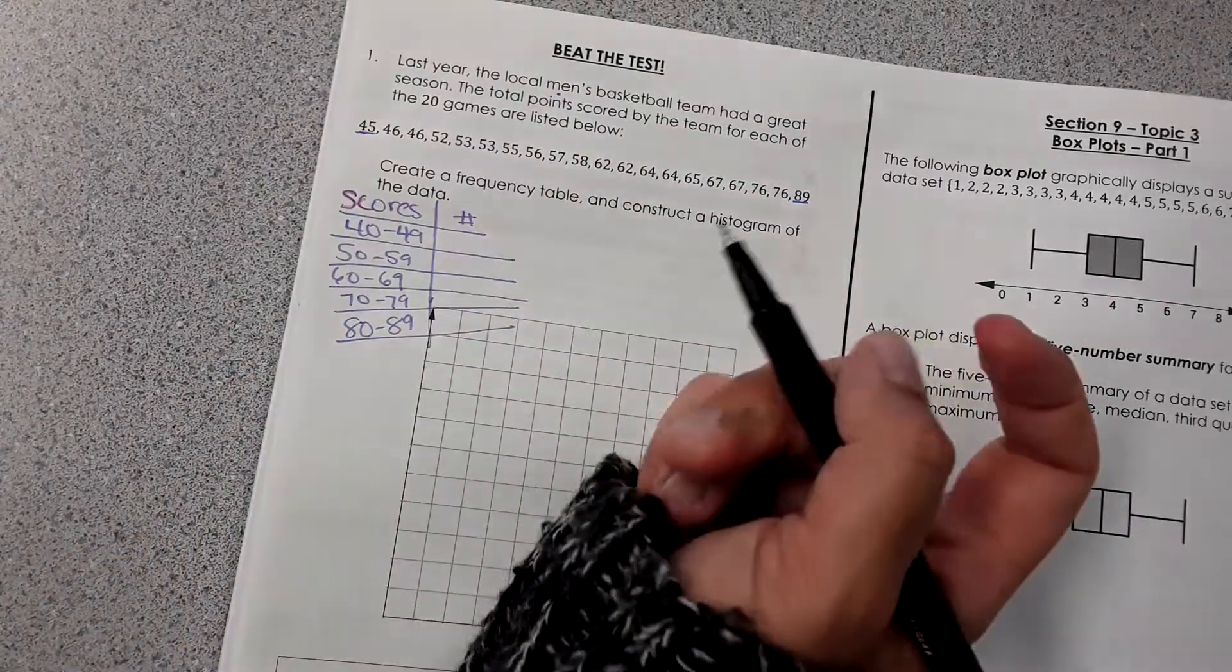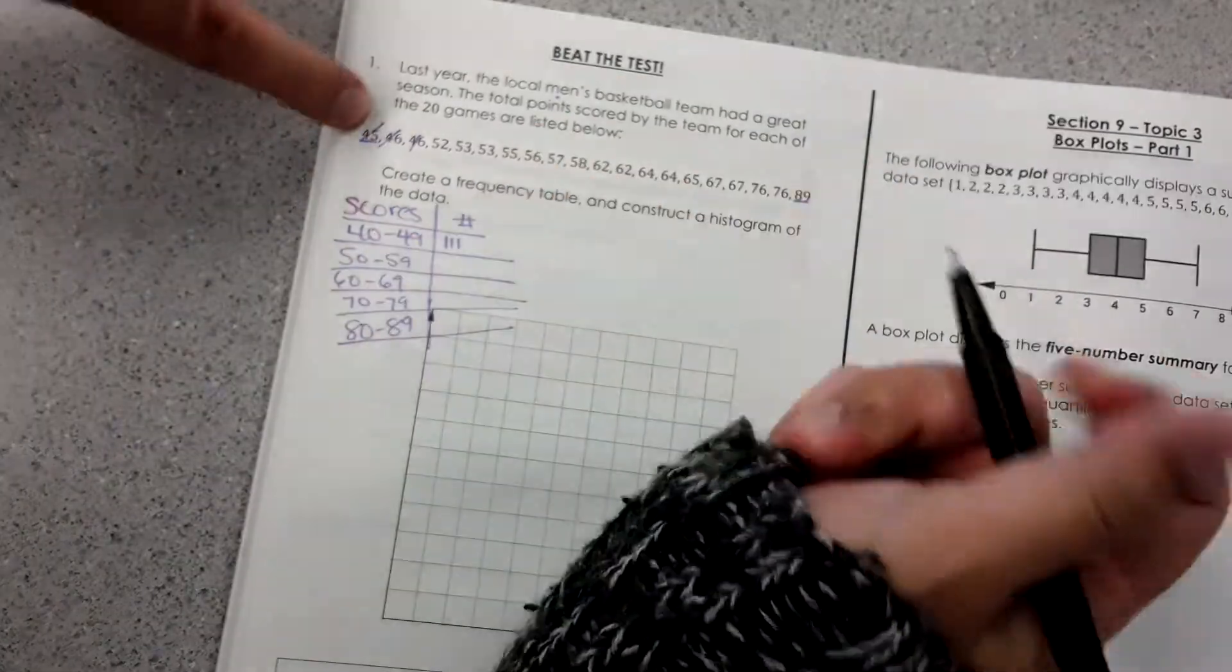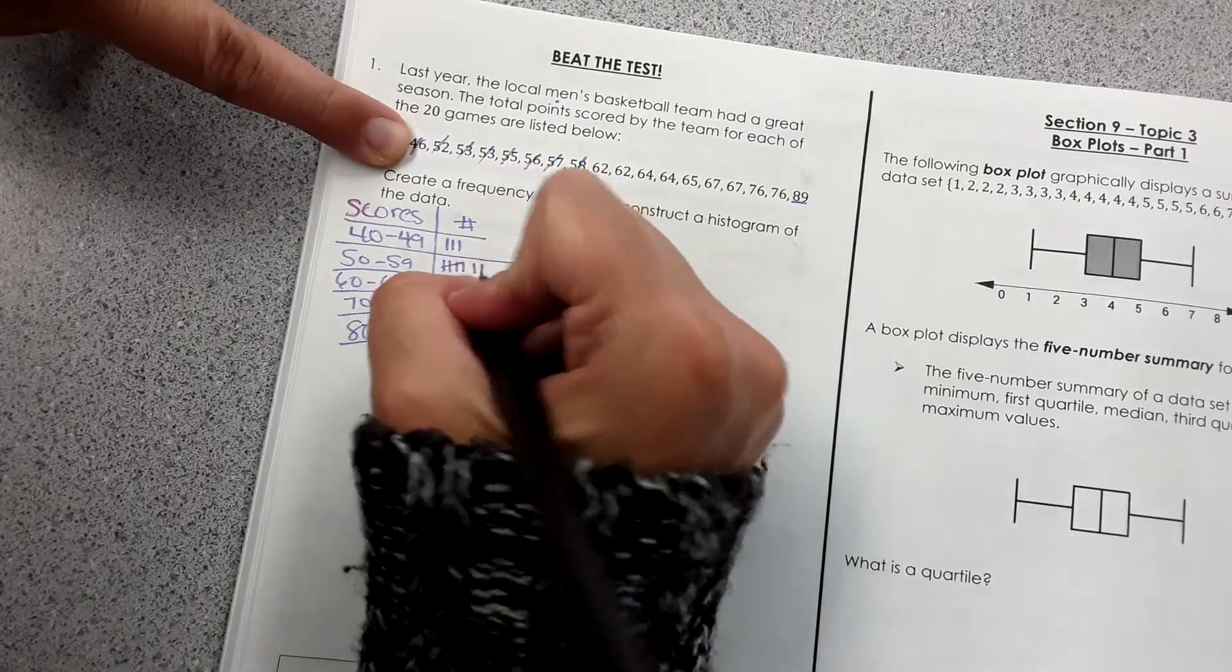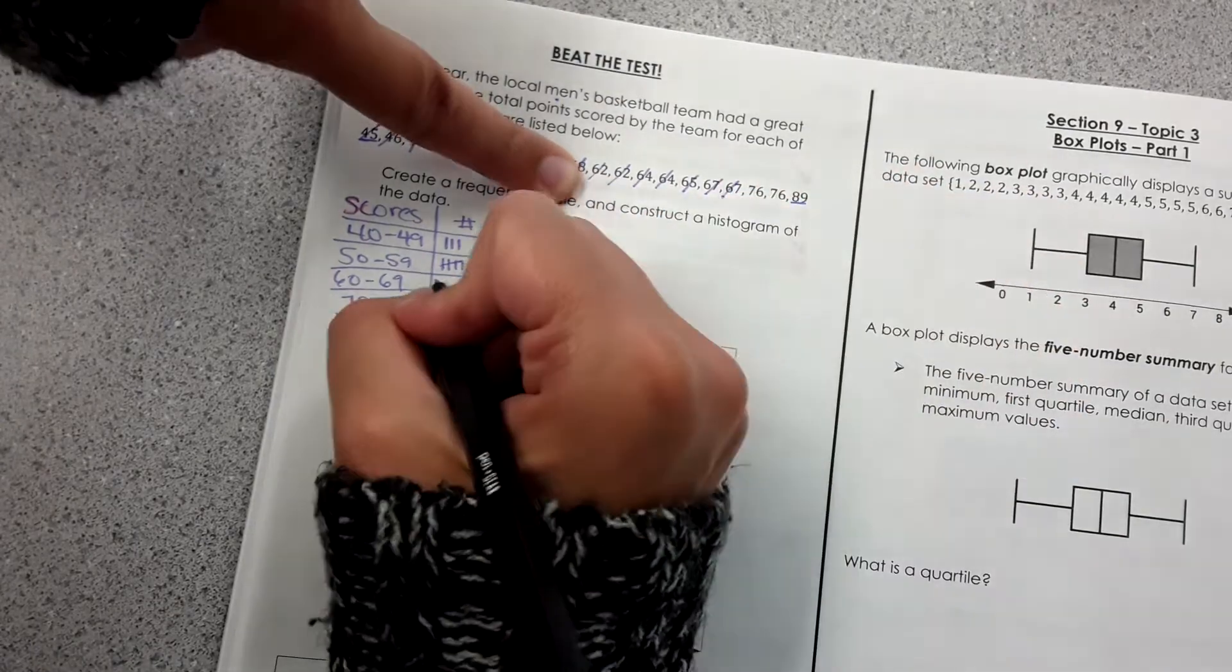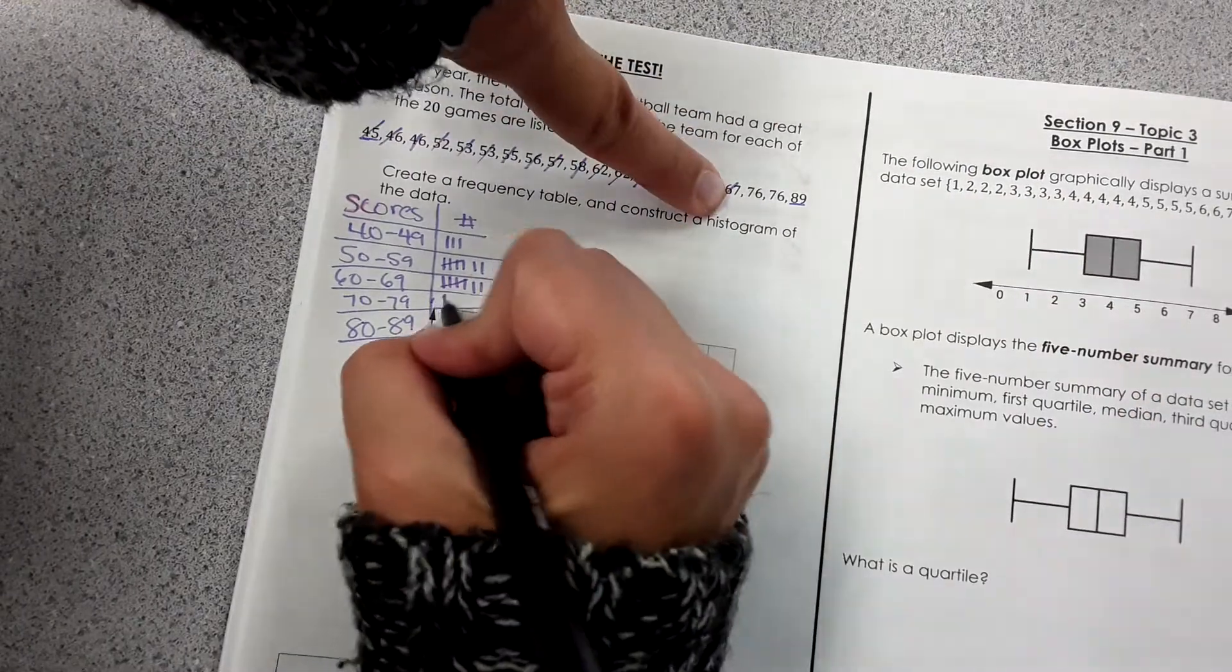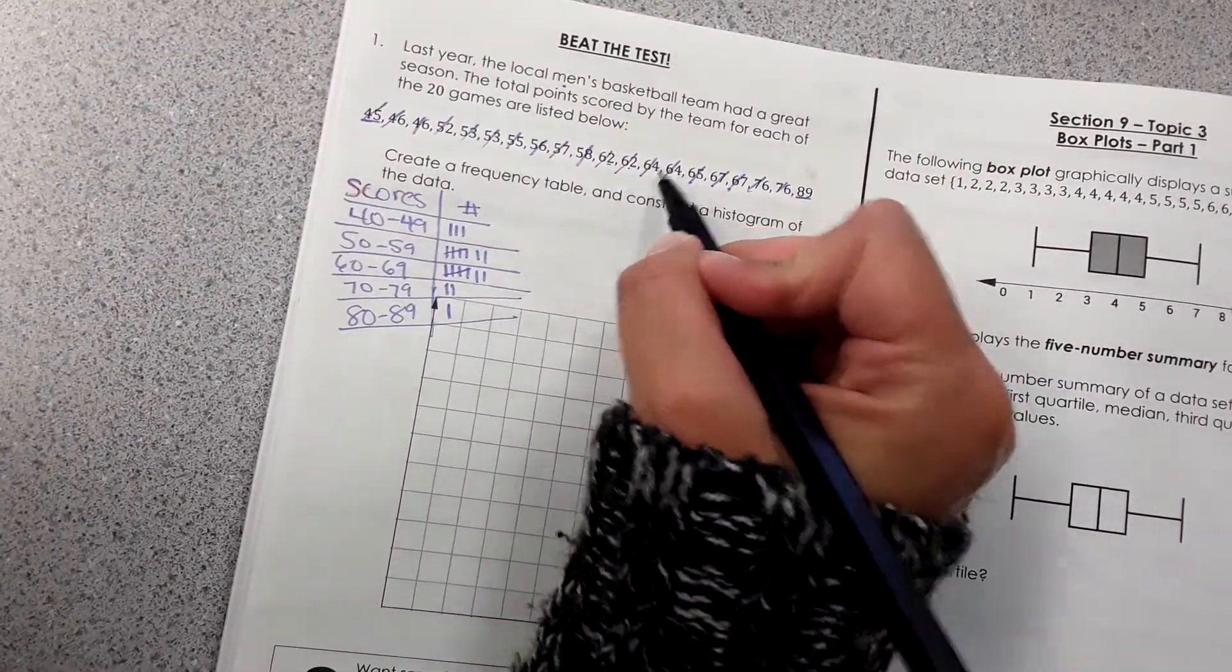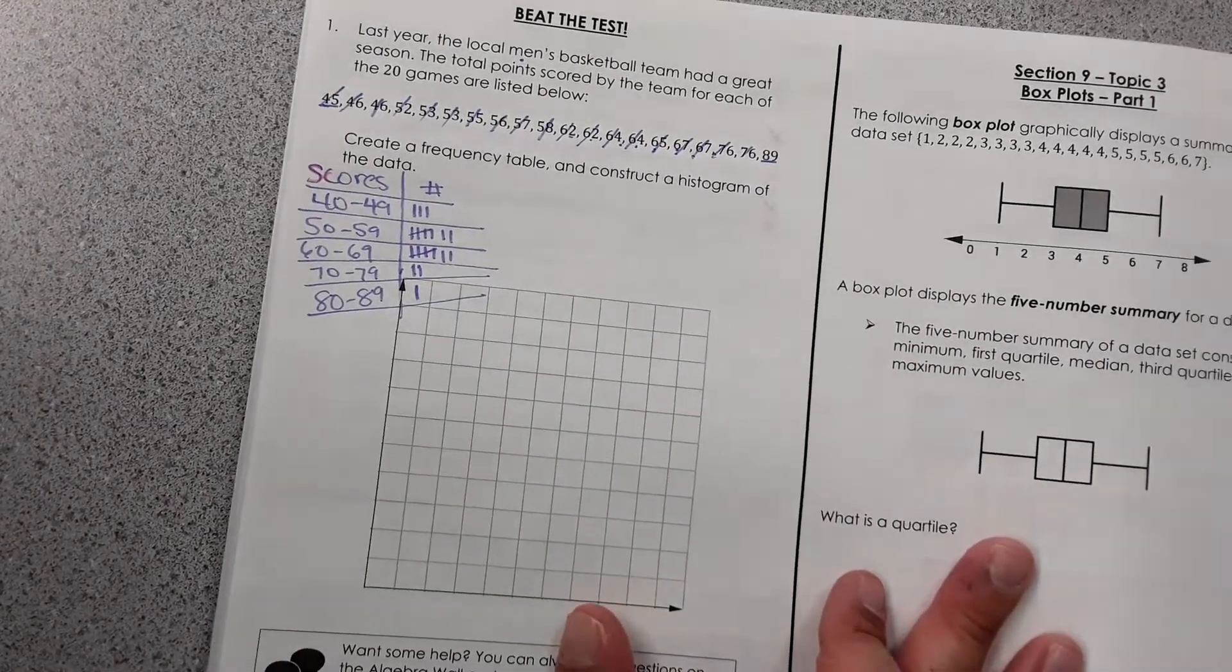And then I'm going to go through the data and just tally it. So there's one, two, three numbers that would fall in the 40s. One, two, three, four, five, six, seven that would fall in the 50s. Seven that fall here and one that falls here. Is that right? One, two, three, four, five, six, seven.